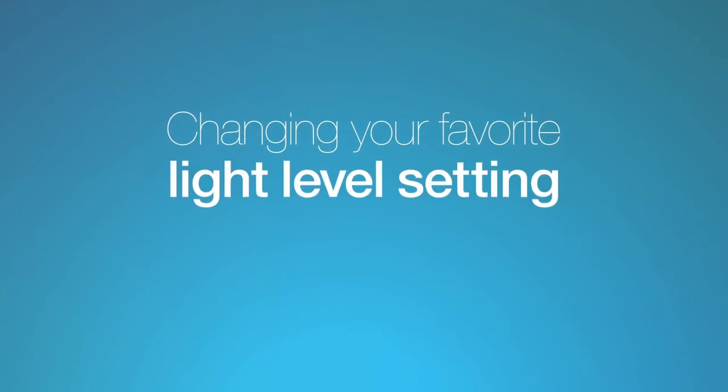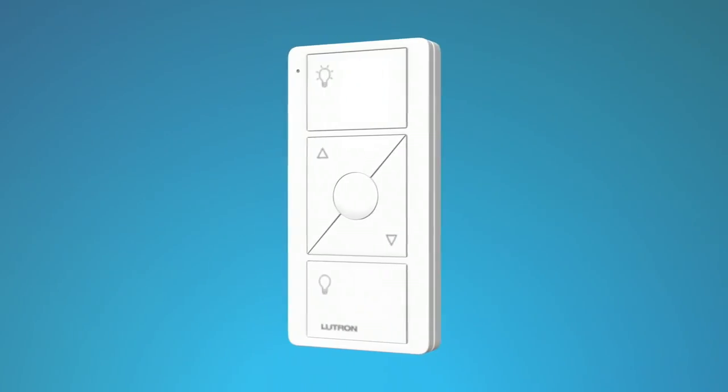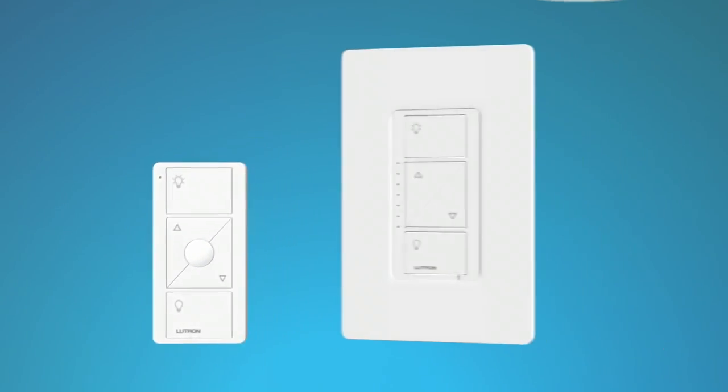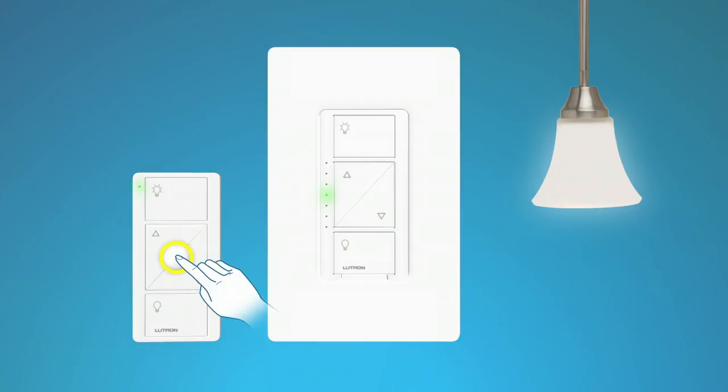Changing your favorite light level setting. You can use the round favorite button on the Pico remote control to recall a favorite light level. We've set it to 50%, but you can change it to any level you like. Here's how. Use the brighter and darker buttons on the dimmer to adjust the light to the level you want for your favorite. Then hold the favorite button on the Pico remote control until the LED on the dimmer blinks twice. Your new favorite level is now saved.